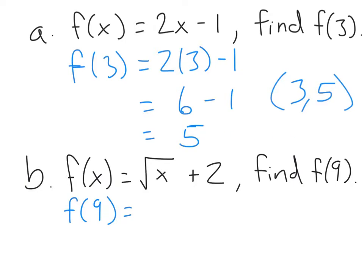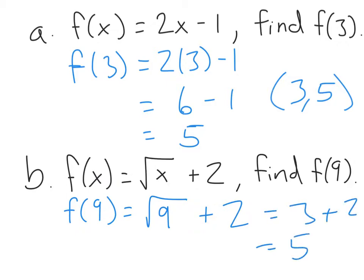Let's do one more. Our function this time is f of x equals the square root of x plus 2, and we want to find f of 9. So f of 9 equals the square root of 9 plus 2. The square root of 9 is 3, so we get 3 plus 2, which is 5. So when the input is 9, the output is 5.